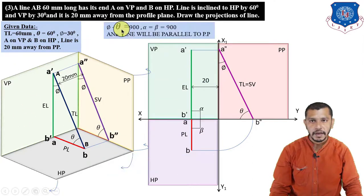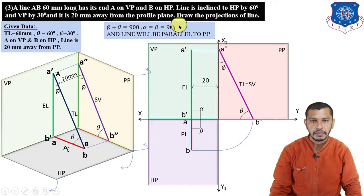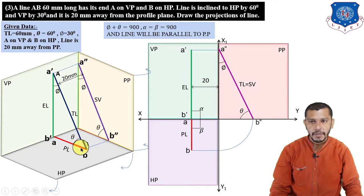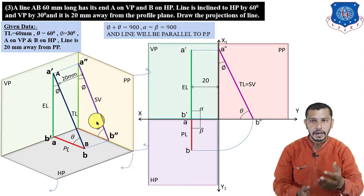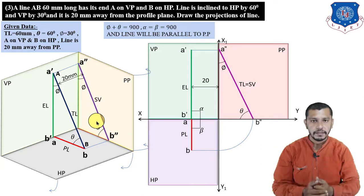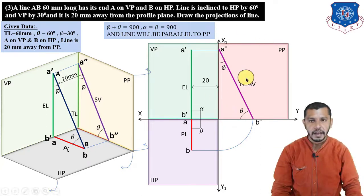Whenever θ + φ = 90°, then α = β = 90°, meaning both the elevation and plan will appear as lines perpendicular to XY. The line will be parallel to the profile plane. Whenever a line is parallel to a particular reference plane, the view of that line on that plane gives the true length. Since the line is parallel to the profile plane, the side view gives the true length. This is the final answer for Problem 3.